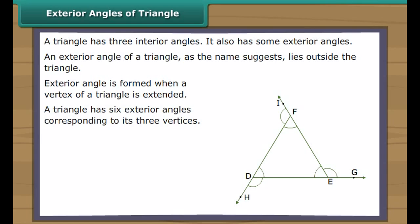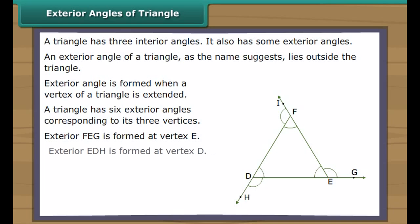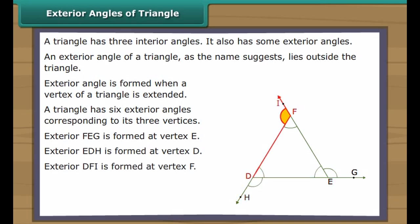Exterior angles of a triangle. If we extend vertex E of triangle FDE, exterior angle FEG is formed. Similarly, when we extend the vertices D and F, exterior angles EDH and DFI are formed.